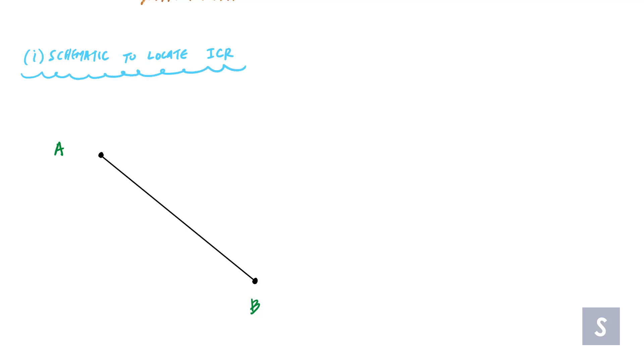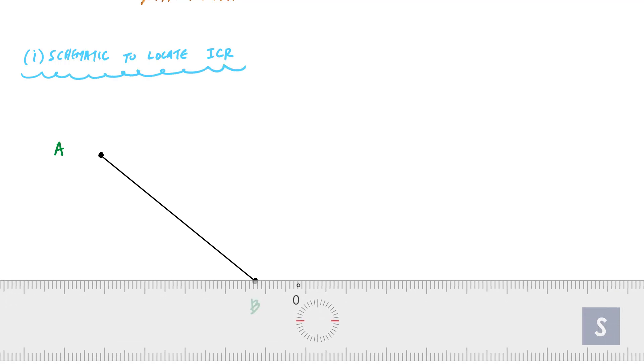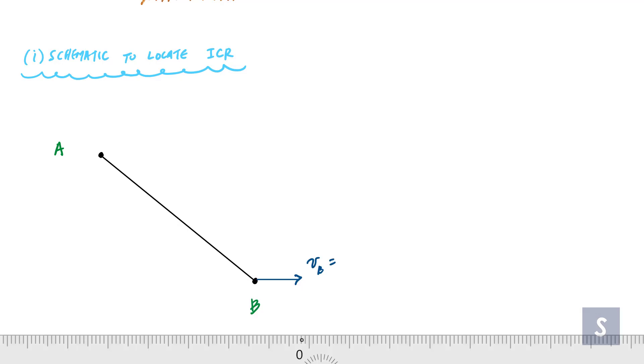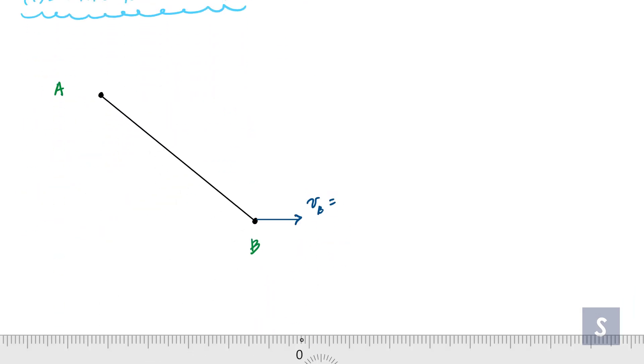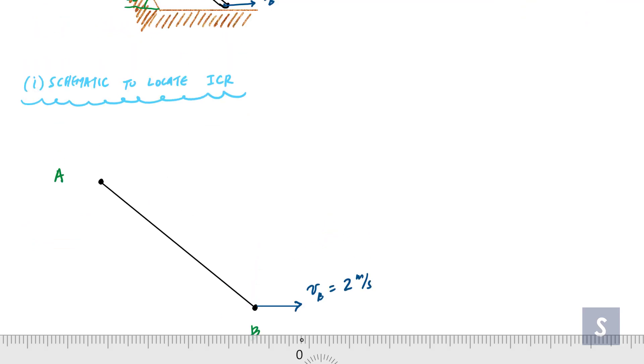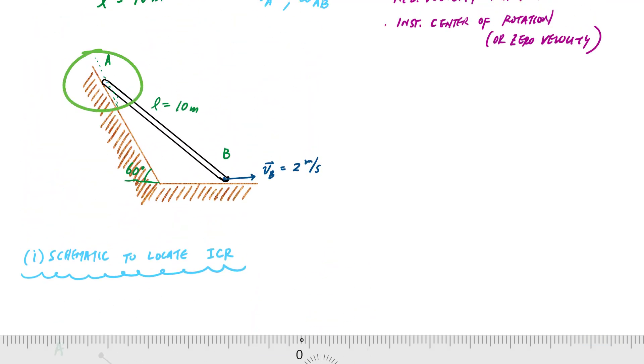I do know that point B here has a velocity that's horizontal. This velocity at point B, I believe, was two meters per second. I know that the edge of the ladder here at A is always moving along the incline, the 60 degree incline.